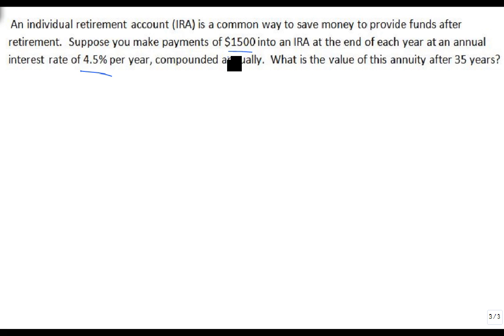So if annually, the N is a 1. And so what we get is our amount is equal to P times 1 plus I raised to the NT over N minus 1, divided by I over N.